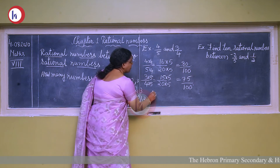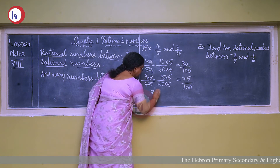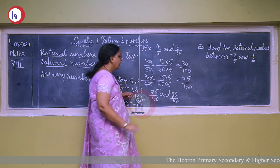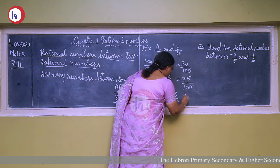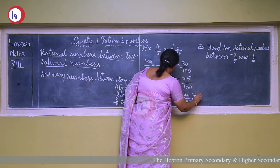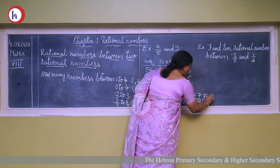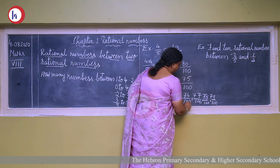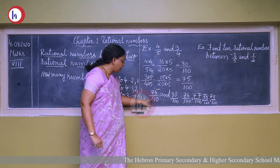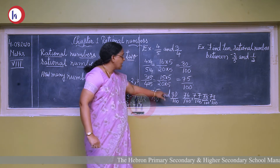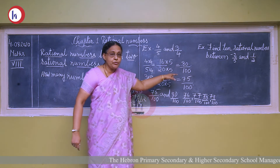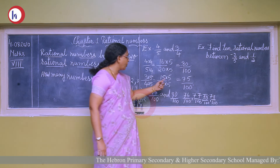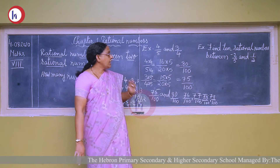Now see the numbers between 75 upon 100 and 80 upon 100. After 75 you get 76 upon 100, 77 upon 100, 78 upon 100, 79 upon 100 — so we got 4 rational numbers between 75 upon 100 and 80 upon 100, which are the numbers between 4 upon 5 and 3 upon 4. If you want more numbers, multiply both denominator and numerator by a greater number like 7 or 8.